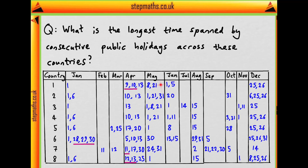In May there's nothing obvious that would form a span. There is a 31st in May and a 1st in June, but that's only a two-day span. In June there are no obvious longer spans, nor in July or August. In August we have the 29th and 31st but that's only a two-day span. September also has a maximum of a two-day span. October has nothing significant. The 31st of October to the 1st of November is only two days. Finally, December has the 25th and 26th as a span.